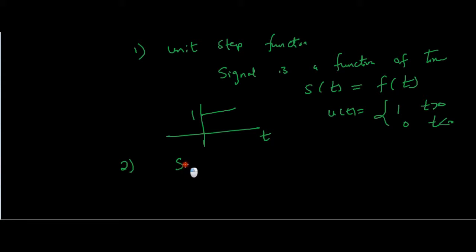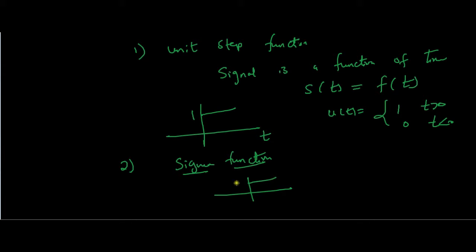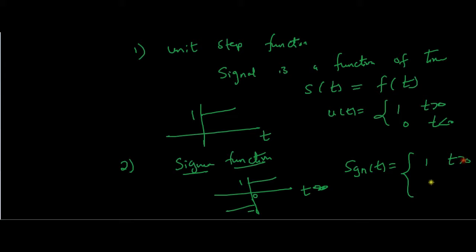The next elementary signal is the signum function. The signum function sgn(t) has a value of 1 for t greater than 0, a value of minus 1 for t less than 0, and a value of 0 for t equal to 0.